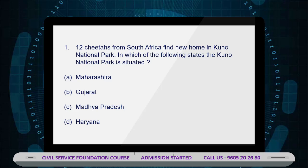Let's check some facts about Kuno National Park. It is situated in the Sheopur district of Madhya Pradesh and was established in 1981 as a wildlife sanctuary. In 2018, it was given the status of a national park. The Wildlife Institute of India and Wildlife Trust of India shortlisted Kuno National Park as a habitat for cheetahs and Asiatic lions.